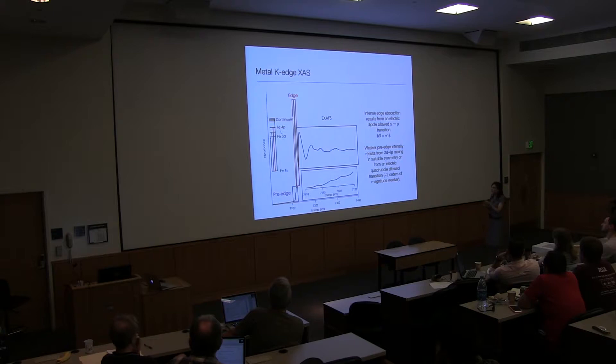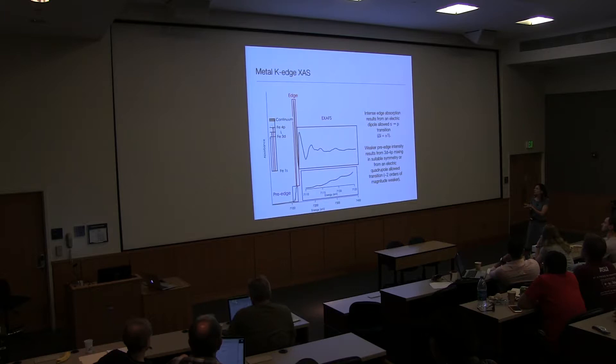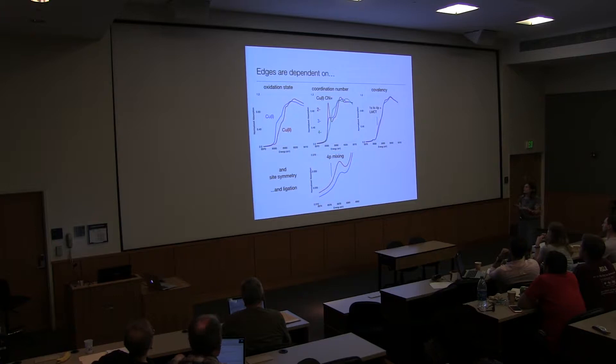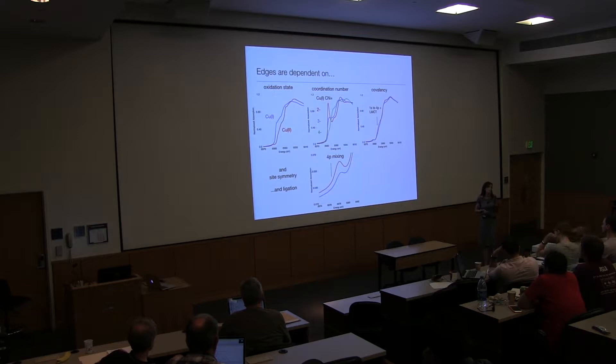So I already showed you that the edge was that sharp discontinuity, and really what this edge is is a dipole-allowed 1s to 4p transition. So this is a transition with a delta L of plus minus 1, so s to p is allowed, and you get a lot of intensity. Now, if you think of something like a D5 iron 3, of course, there are other transitions below the 4p that are allowed, and those are transitions into the unoccupied 3d levels. But this is now a 1s to 3d transition, a delta L of 2, so it's dipole-forbidden but quadrupole-allowed, and there you can see how much weaker the quadrupole transition is relative to this dipole transition.